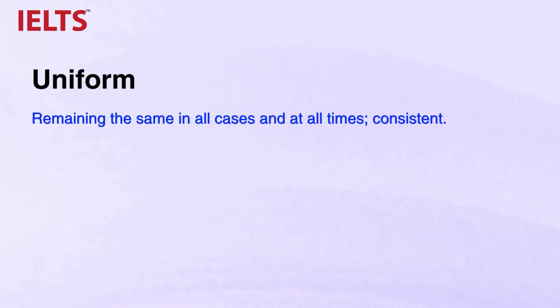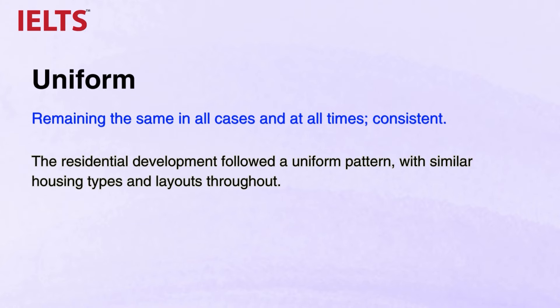Then we have UNIFORM, meaning remaining the same in all cases and at all times — consistent. The residential development followed a uniform pattern with similar housing types and layouts throughout. You can use this adjective when there is a consistent or repeating pattern in a map.